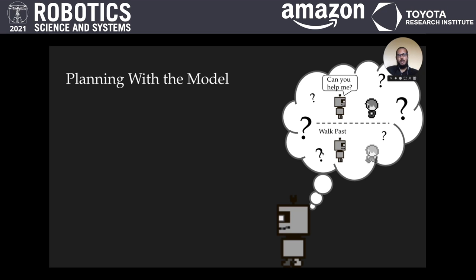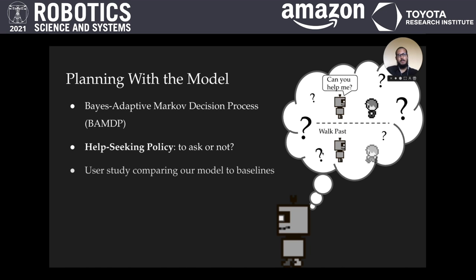We then integrate our model into a Bayes-adaptive Markov Decision Process Planning Framework, and run another user study comparing our model to baseline models. In this user study, users interact with a robot that is autonomously determining whether or not to ask for help using a human help model.